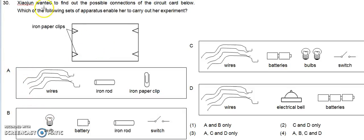So option B is out because option B has no wires in it. We would need batteries, light bulbs, or electrical bell to enable it to light up for iron paper clips. Iron rod we do not need.